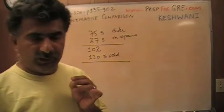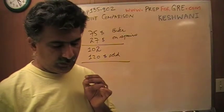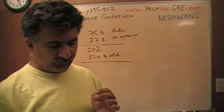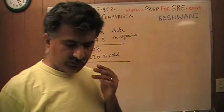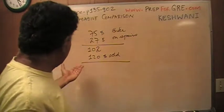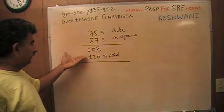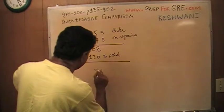The question simply is, we're asked to compare - in column A we have the money Betty received in excess of the total amount she spent. In other words, the amount of profit she made. Well, she sold it for $120 and had spent $102 altogether on it, so she made a profit of $18. This is our profit.